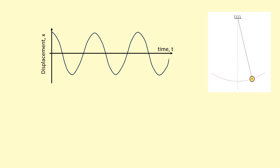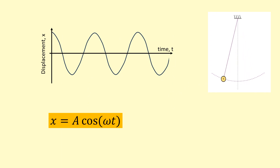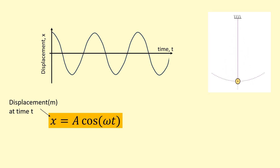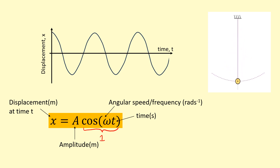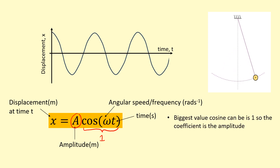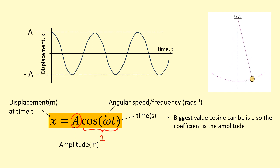There are equations for this. The displacement is given by x = A cos(ωt), where x is the displacement in meters at a particular time t, and A is the amplitude — the largest displacement, also in meters. The largest value cosine can take is one, so the number in front is the amplitude — the biggest displacement you can have. You can sketch it on the graph or read off the largest value on the y-axis.